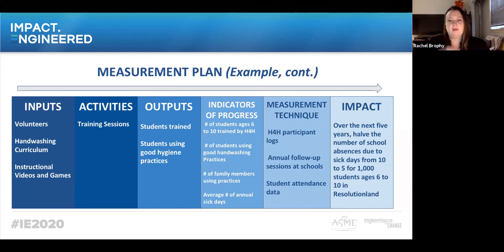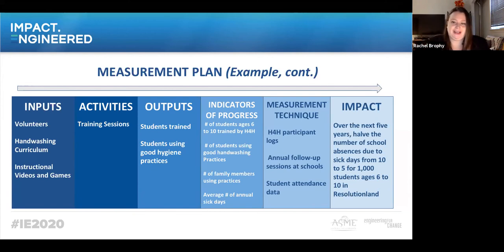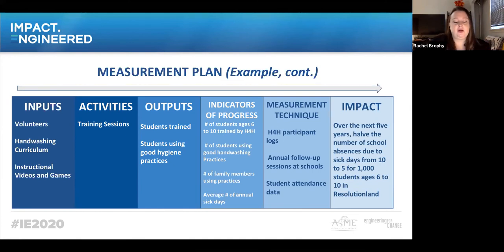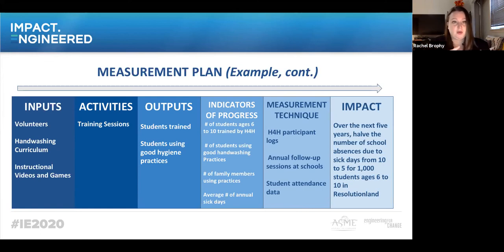When looking at your measurement plan, think through all the components of the logic model and ask: how are you going to measure this? What do you want to accomplish? How will you measure your progress? Where will your data come from? What's your goal for next year, and how will you measure it? It can feel overwhelming, but if you start asking the basic questions — who, what, where, when, why, and how — you can start to build out a plan. You've identified inputs, activities, indicators of progress, and measurement — now think about how you're going to do it.